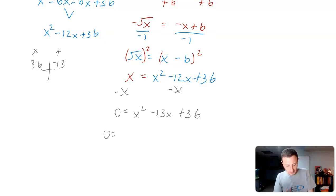I could do that because 9 times 4 is 36, but I wanted to add up to negative 13. 9 plus 4 is positive 13. What if I make both of these negative? Negative 9 times negative 4 is positive 36, negative 9 plus negative 4 is negative 13. There we go. So 0 equals x minus 9 times x minus 4.